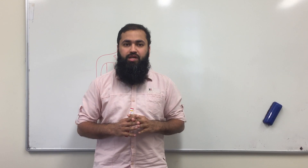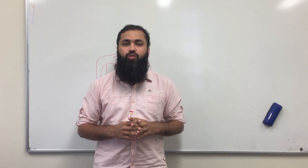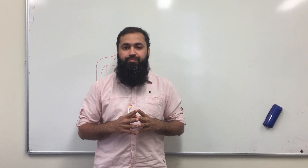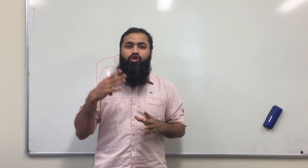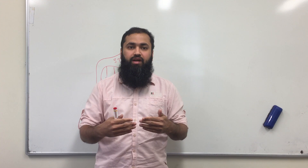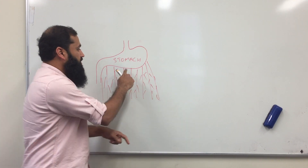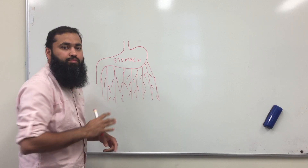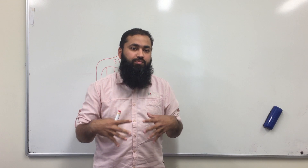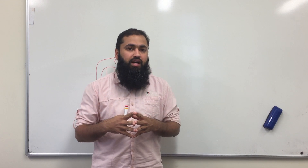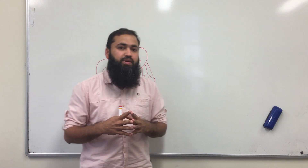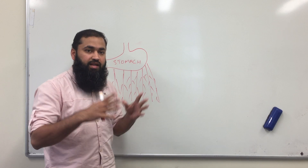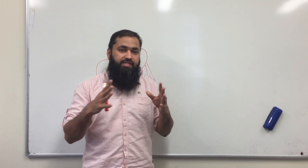Today we are going to discuss the abdominal policeman. It is a fold of peritoneum which acts as an apron, starting from the bottom of the stomach and covering all the abdominal organs, keeping them in place. This fold is called the omentum, and the omentum is also called the abdominal policeman.